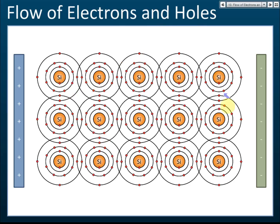In a heated semiconductor placed in an electric field between a positive and a negative plate, an electron that absorbs heat can jump out and become a free electron. This free electron moves toward the positive plate. When the electron jumps out, it leaves a hole behind.